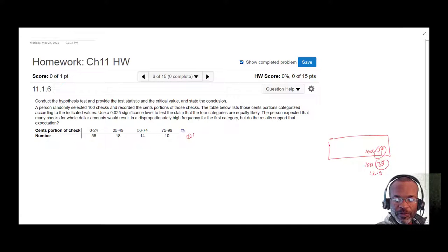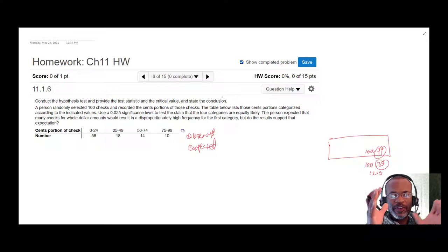So we have an observed list, but we also can formulate an expected list. We want to test whether or not observed is a real deviation from what was expected. How well do the observed values, those observed frequencies, fit with what is expected?